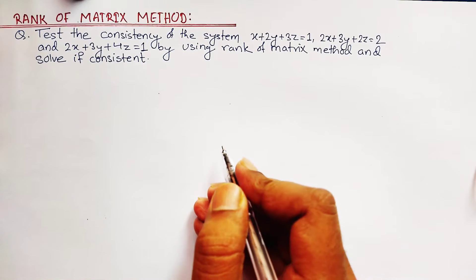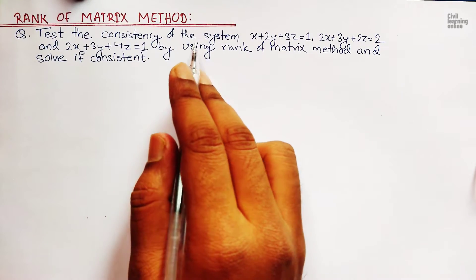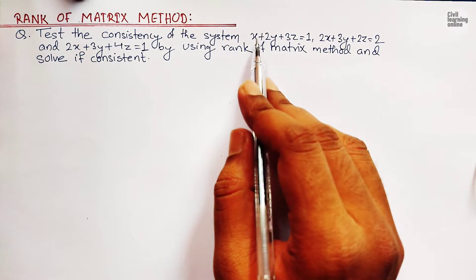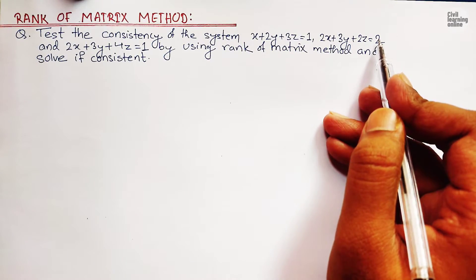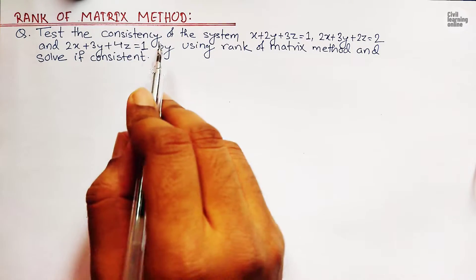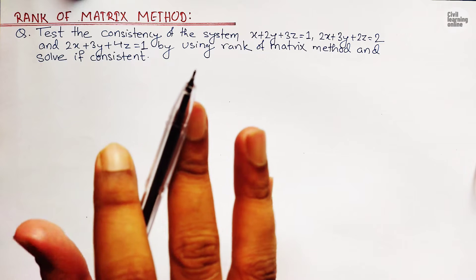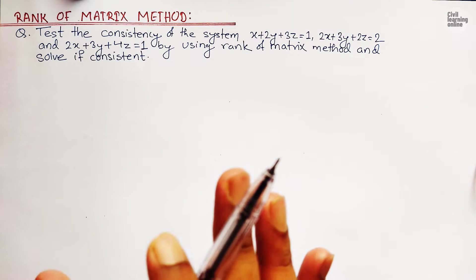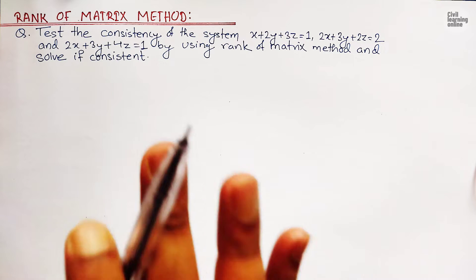Let's begin the solution of this video. Here we are asked to test the consistency of the system. We are provided with three equations: the first one is x plus 2y plus 3z equals to 1, the second is 2x plus 3y plus 2z equals to 2, and the third is 2x plus 3y plus 4z equals to 1. We are asked to use the rank of matrix method and solve if it is consistent. Here are a few statements about the rank of matrix method which one must know before solving any numerical based upon this method.